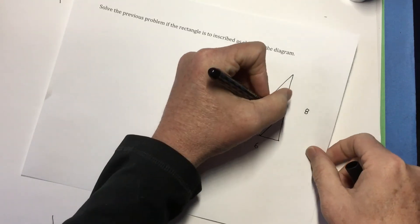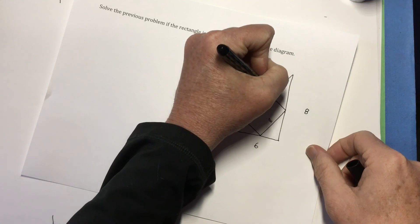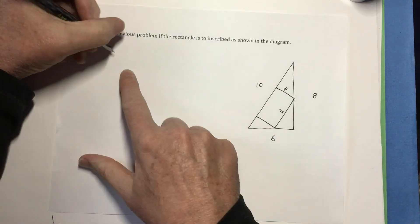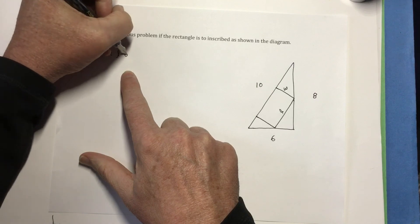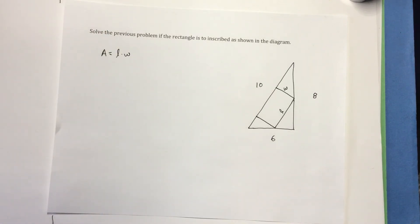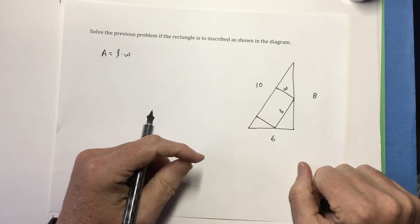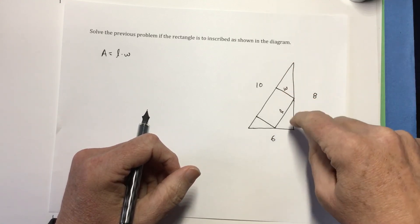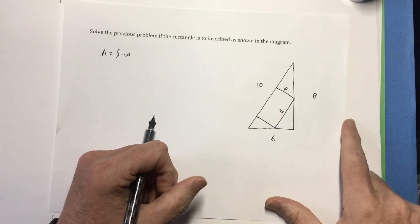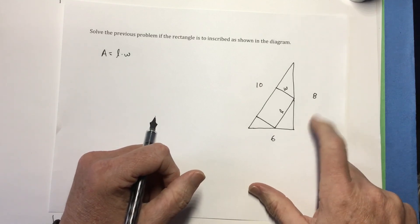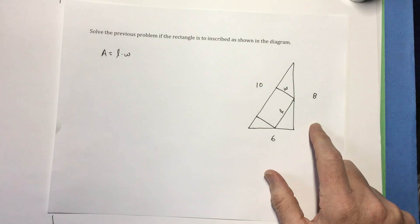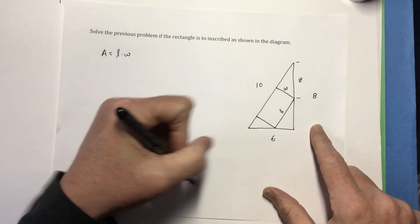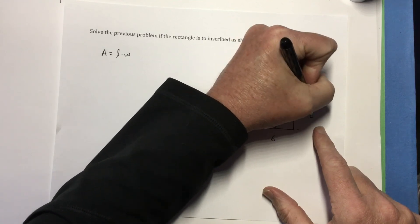Again, I'm going to call this length here. Call this width. So my area that I'm trying to maximize will simply be length times width. Well again, it's the same idea. We've got similar triangles all around. So that triangle is similar to the large one, which is similar to that one, which is similar to that one. So I will use the letter Z. I'm going to label this distance right here Z. That means this distance here would be 8 minus Z.